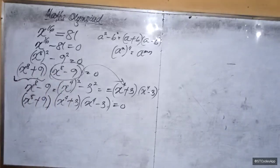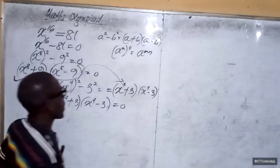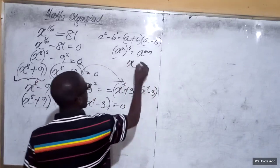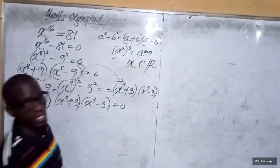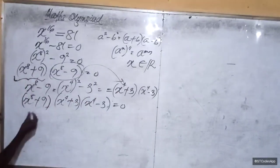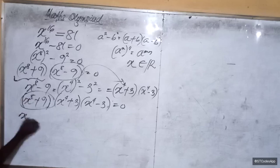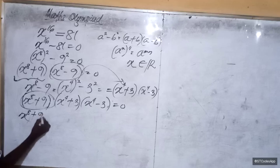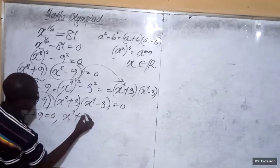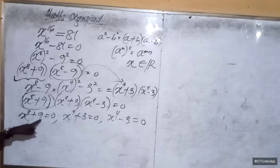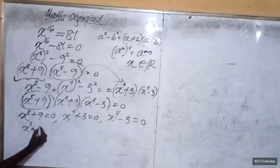Now keep in mind that the particular x we are looking for is a real number. So since it's a member of real numbers, if the product of these three is zero, definitely x raised to the power 8 plus 9 is zero, or x to the power 4 plus 3 is zero, or x to the power 4 minus 3 is zero. Now if x to the power 8 was zero here, then it means that x to the power 8 was equal to negative 9.